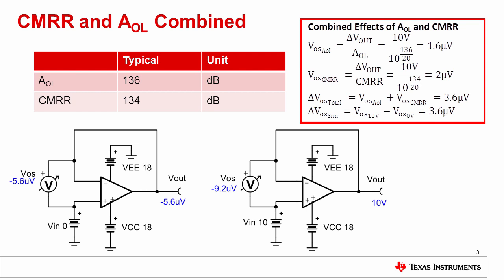This slide emphasizes how common mode rejection ratio, CMRR, and AOL errors are often combined in many common configurations. In this example, the input voltage on a simple buffer is shifted from 0 to 10 volts. Therefore, the common mode voltage as well as the output voltage shifts from 0 to 10 volts. The shift in output voltage introduces an error reflected to the input from the open loop gain, or AOL.